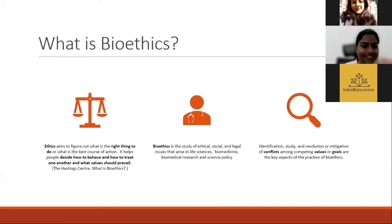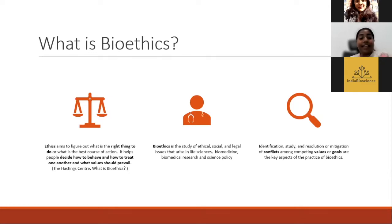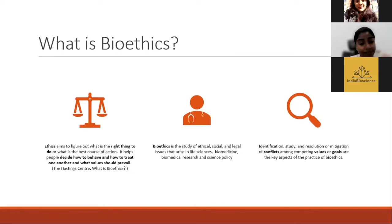So what is bioethics? Ethics aims to figure out what is the right thing to do, or what is the best course of action. It helps people decide how to behave, how to treat one another, and what values should prevail. Bioethics is the study of ethical, social, and legal issues that arise in life sciences, biomedicine, biomedical research, and science policy. It is also very interdisciplinary, incorporating philosophy, sociology, and medical anthropology. Identification, study, and resolution or mitigation of conflicts among competing values or goals are the key aspects of the practice of bioethics.